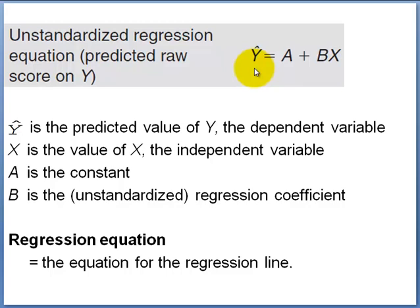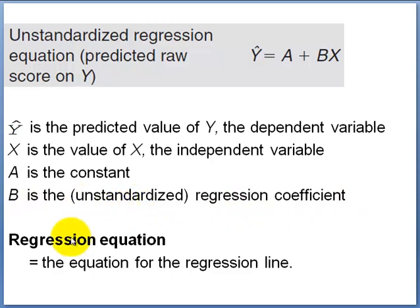Let's go over some of the symbols. The y-hat, or y-caret, conveys the predicted value of the dependent variable. X is the value of the independent variable for an individual case, and predicted y pertains to the predicted value for that individual case. We're going to learn about a, which is termed the constant, and b, which is the regression coefficient or more formally the unstandardized regression coefficient. This regression equation is the equation for the regression line.